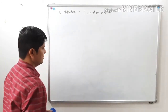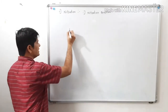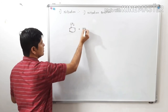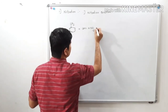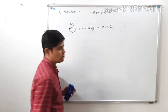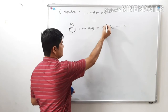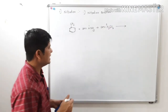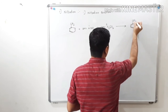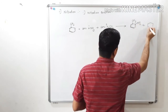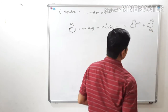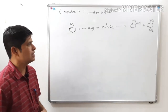Now let us see some examples. First example: toluene reacted with concentrated nitric acid plus concentrated sulfuric acid (the nitrating mixture) gives a mixture of products — ortho-nitrotoluene and para-nitrotoluene — because the methyl group is ortho/para directing.